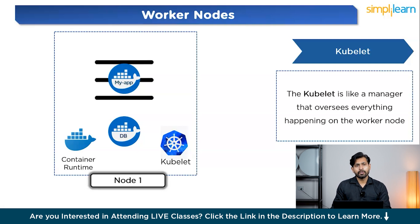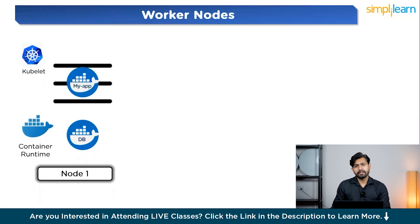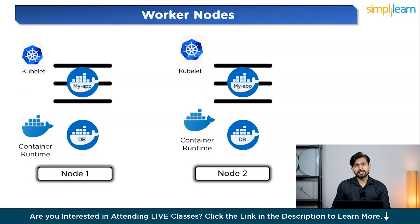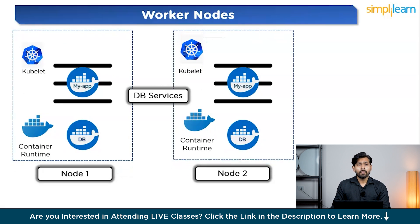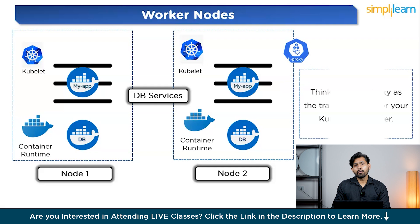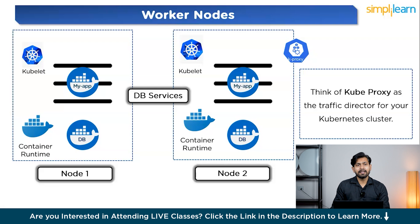Now let's understand Kube Proxy. Think of Kube Proxy as a traffic director for your Kubernetes cluster. In distributed systems like Kubernetes, your applications run on different nodes. Kube Proxy is responsible for managing network traffic and ensuring that data is routed correctly between different services and pods. When applications need to communicate with each other, Kube Proxy sets up the necessary network rules and ensures that traffic flows smoothly between different pods, services, and nodes. It manages the internal networking of the cluster and ensures that each pod has a unique IP address.